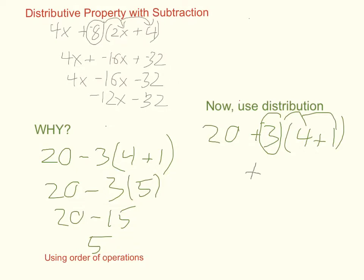So that's going to give me a negative 12. 3 times 4 is 12. And this negative 3 times 1 is going to give me a negative 3.